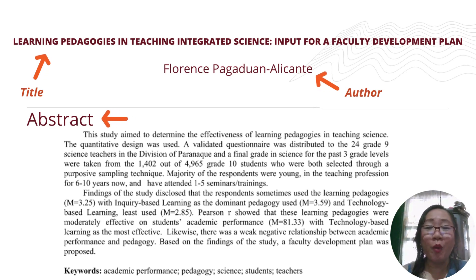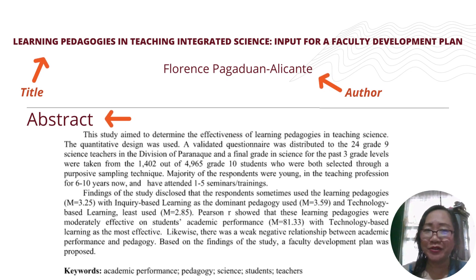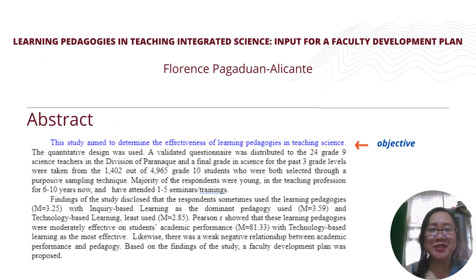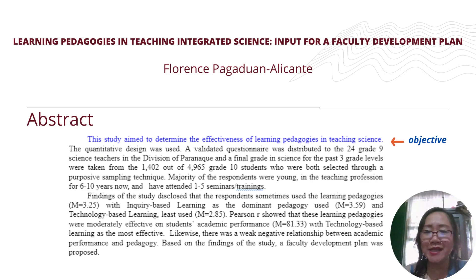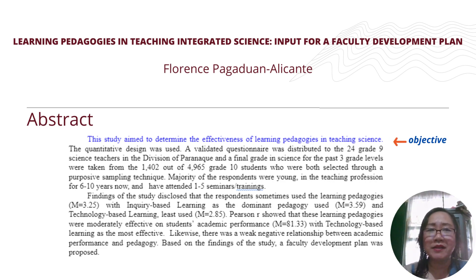Now let us identify what should be written in an abstract. The abstract should contain the objective of your study — what you want to achieve in conducting your research. For example: 'This study aimed to determine the effectiveness of learning pedagogies in teaching science.' For an experiment, you might state: 'This study aimed to determine the effect of green water on the growth of a moon plant.'